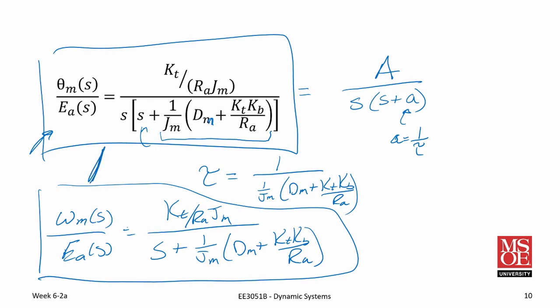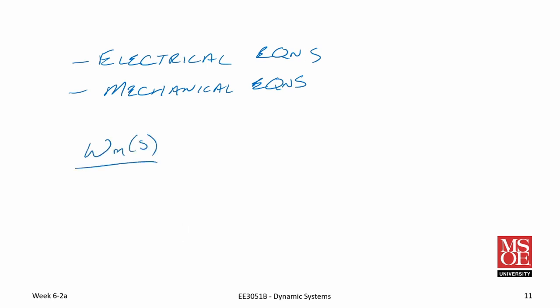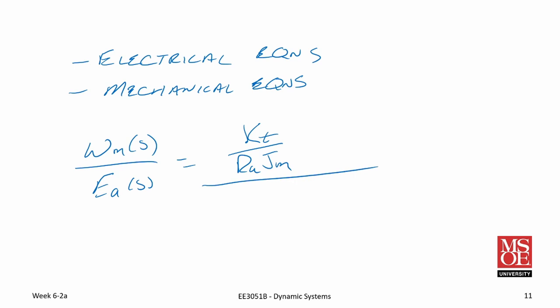I strongly encourage you to write both of these equations down in your notes and have them ready to go. We're going to use these often in the remainder of this course as well as in a control systems course when we look at controlling a motor. To wrap up this video, we looked at the DC motor model, derived the electrical equations and the mechanical equations, combined them together, and obtained an equation that related the angular velocity to the applied armature voltage, which was equal to K sub T over R sub A times J sub M, divided by S plus 1 over J sub M times the quantity D sub M plus K sub T times K sub B all over R sub A.